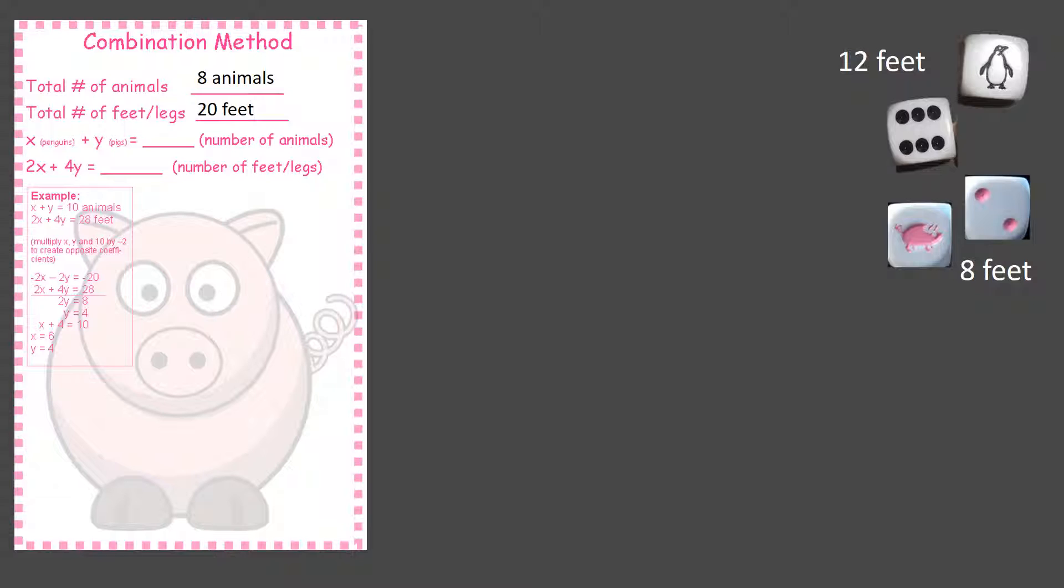So then they're going to plug it into this equation. X, which equals the number of penguins, plus Y equals the total number of animals, which is eight. And then the two X plus four Y is going to tell you the feet, because two times X, which is penguins, plus four times Y, which is pigs, will give you the total of twenty.